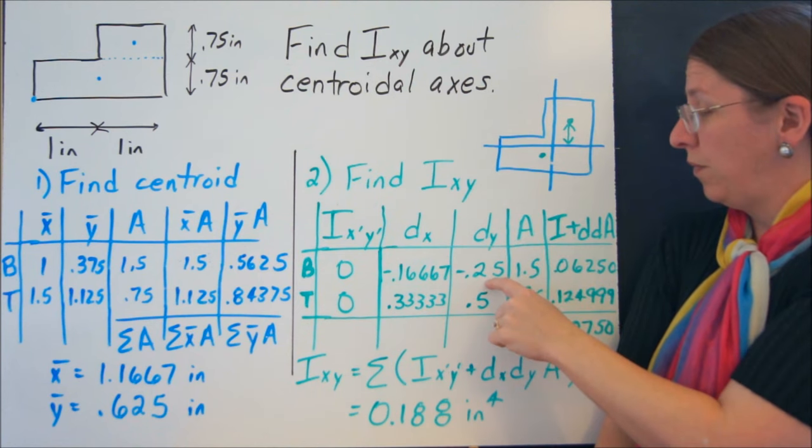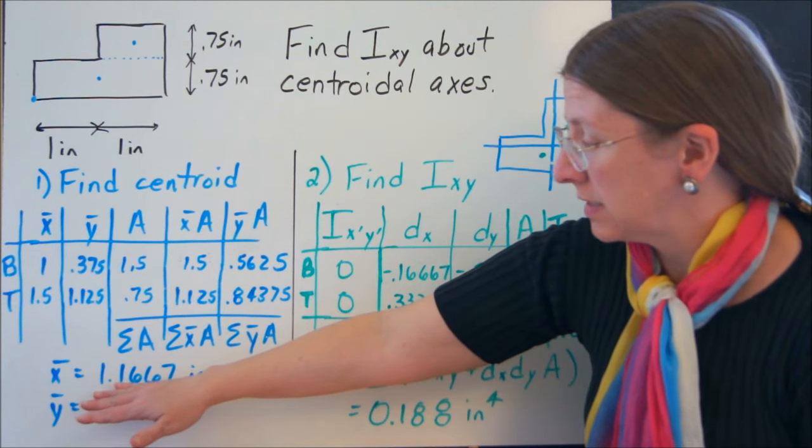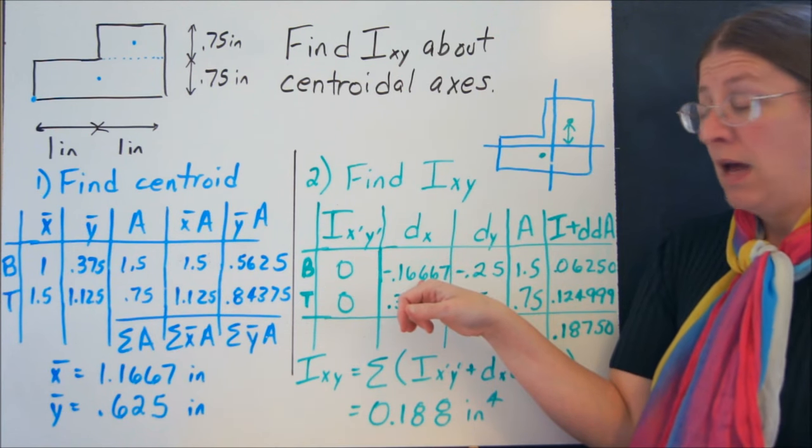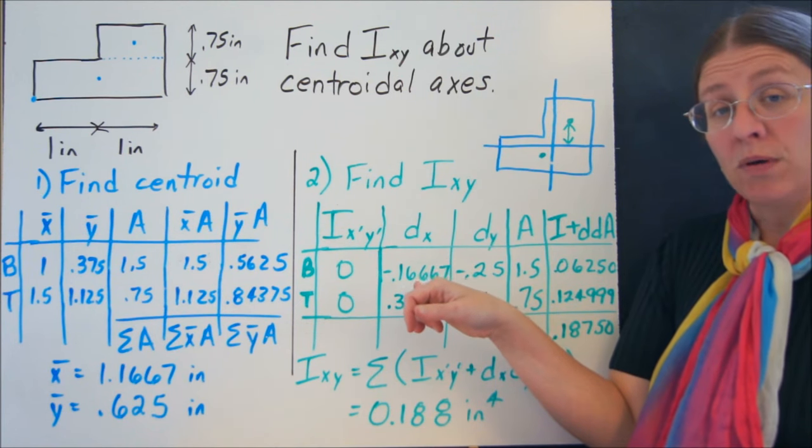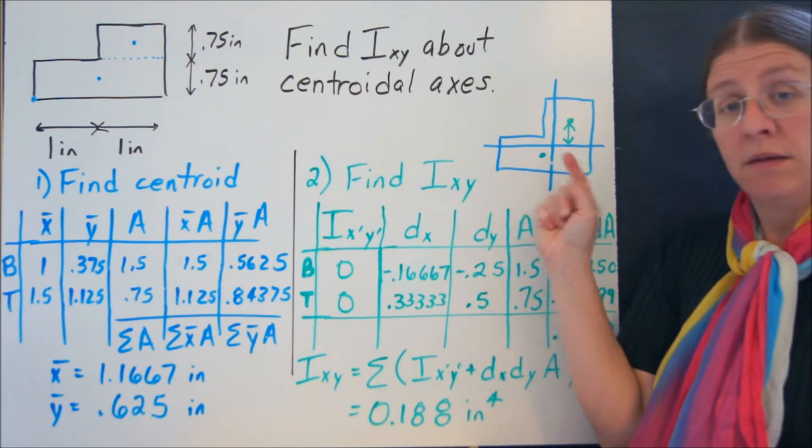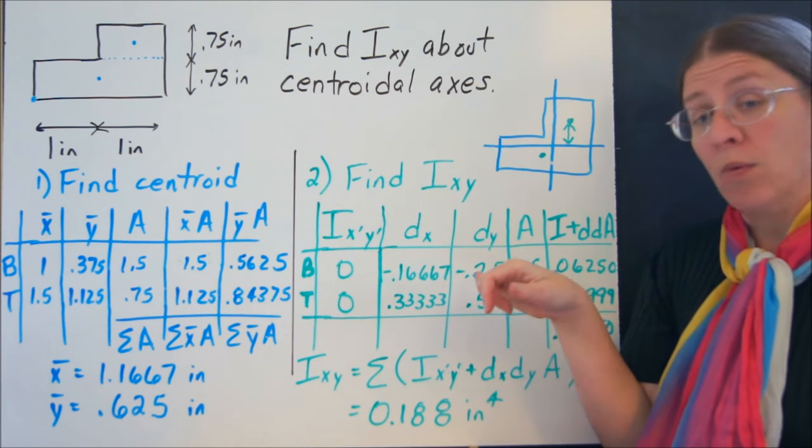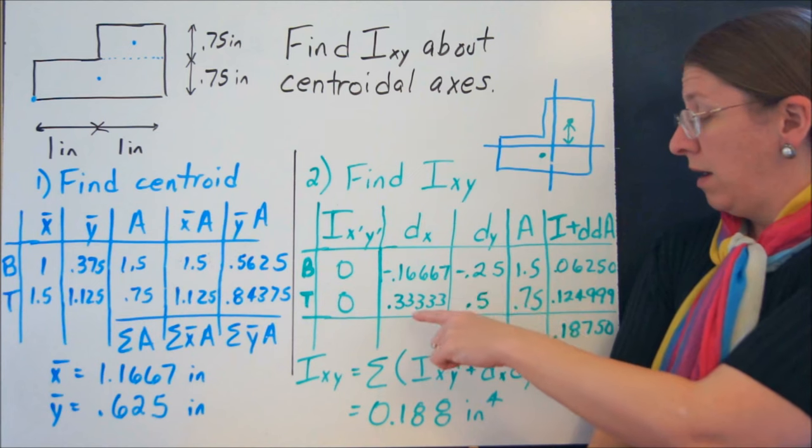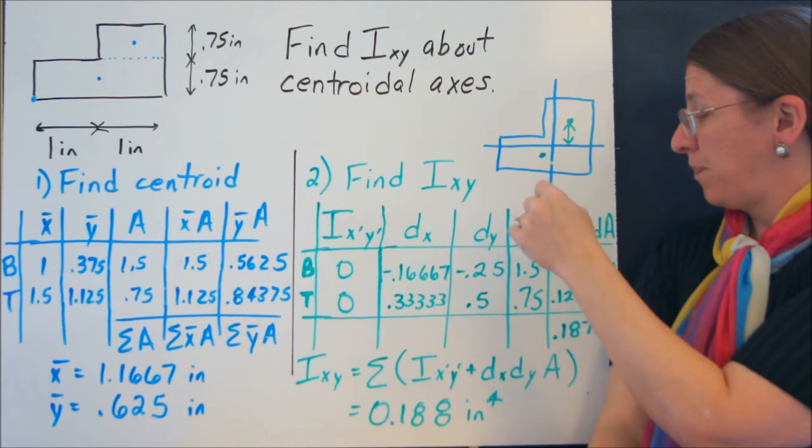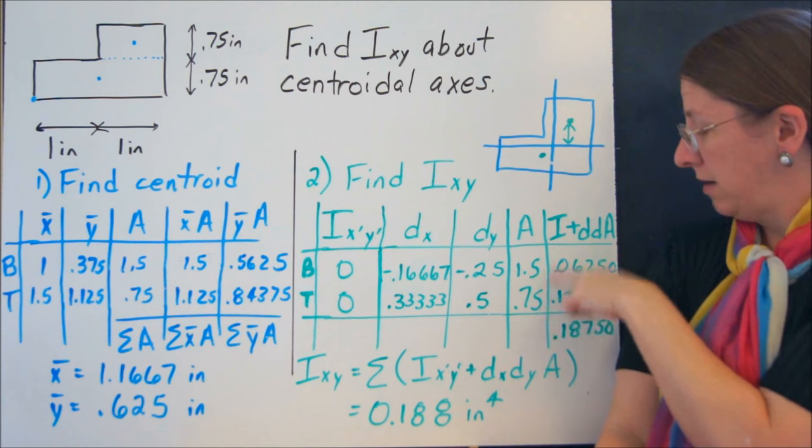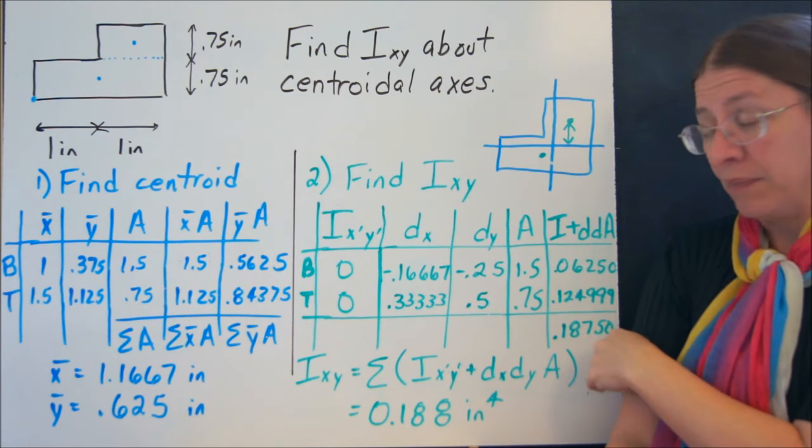So you've got, for example, 1.1667 minus 1 gives you this dx. Notice that this is a negative number. That point is left and down. So dx and dy are both negative. dy is positive for 1 and negative for 1, like this. There's your A. This is what I'm going to do to add up this last column.